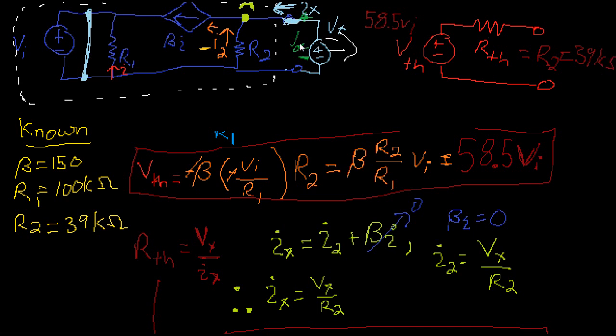There you go. So we've taken this rather complex circuit with a dependent current source and simplified it down into a single voltage source and a single resistor in series. And the next video, let's see. Yep. I guess we will look at doing the same thing, but instead of finding the Thevenin equivalent, we'll be looking at finding the Norton equivalent representation.